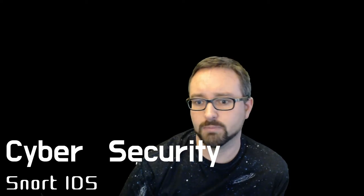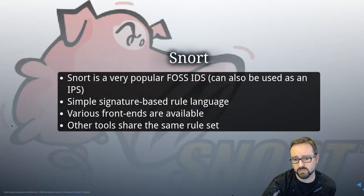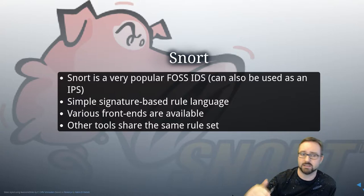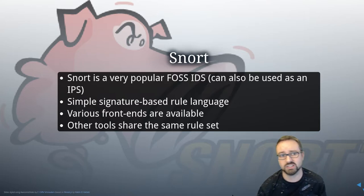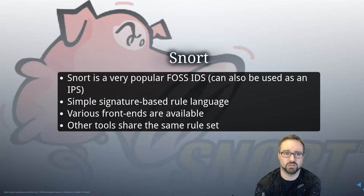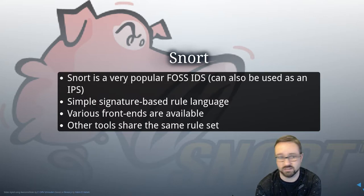SNORT has a simple signature-based language — basically a set of rules it uses to check against. Whenever there's network traffic where SNORT is listening, it processes the packets it sees, does defragmentation and the rest, so it can view a stream of information rather than just individual packets. It then applies the SNORT rules and preprocessors to what's on the network and generates alerts based on what it sees.